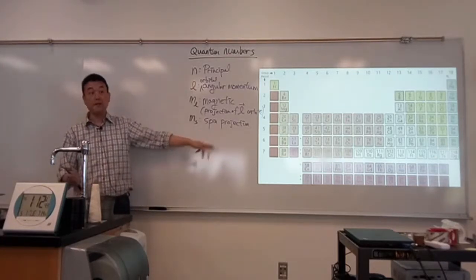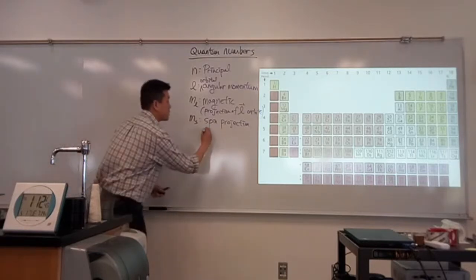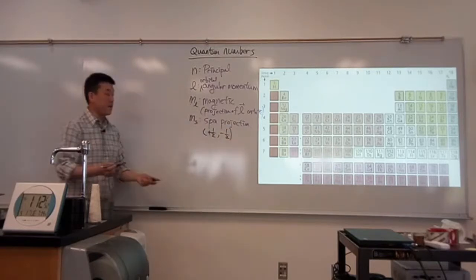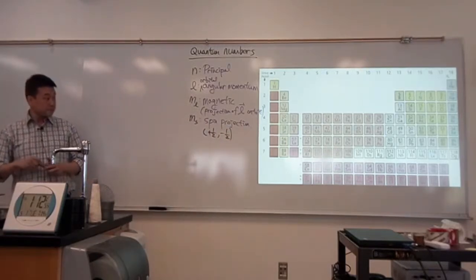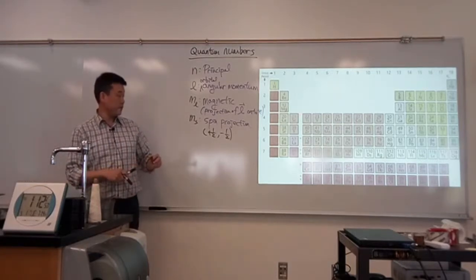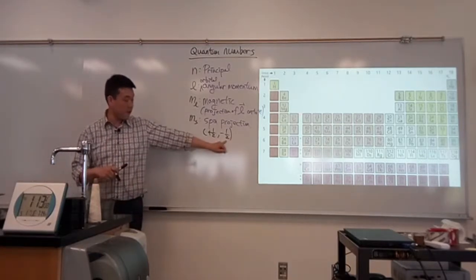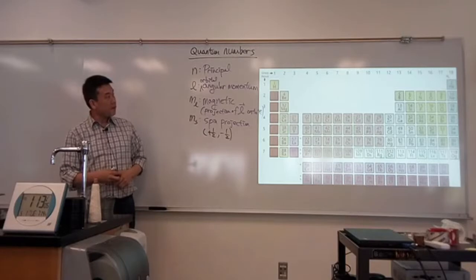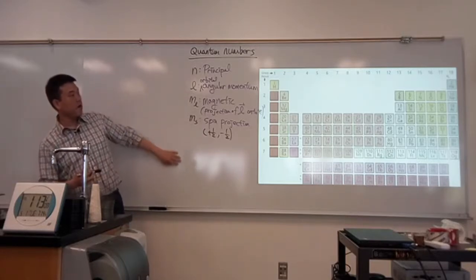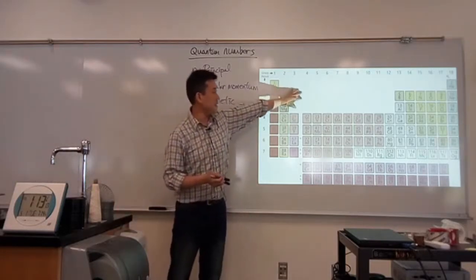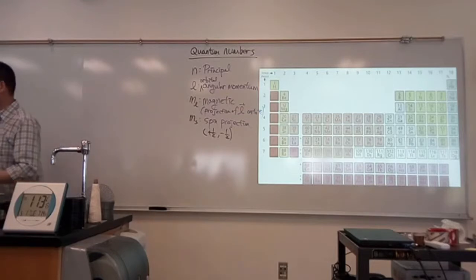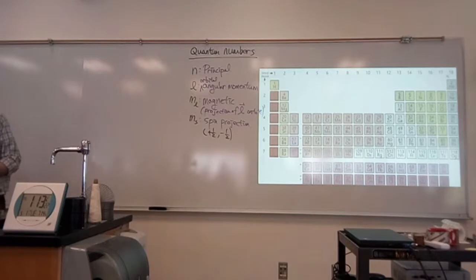For spin projection, because the magnitude is one-half, the projection can take values of plus one-half or minus one-half. That will help distinguish between one particular state and another. You can begin to see how these quantum numbers match up with things labeled on the periodic table, so let me start writing down numbers and make a better physical connection.